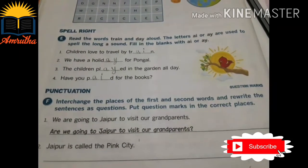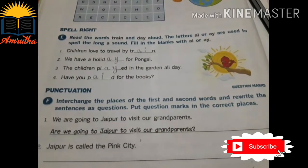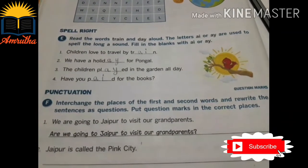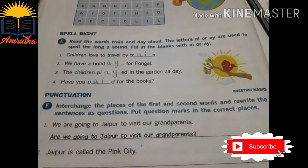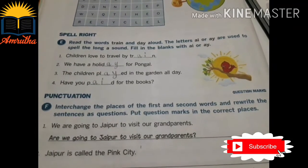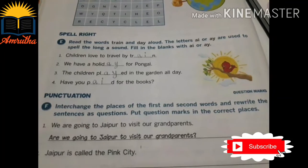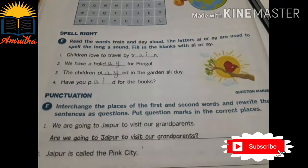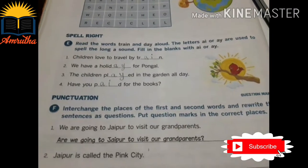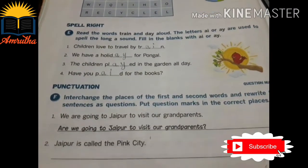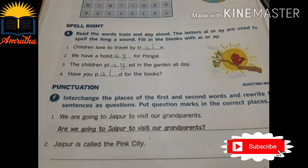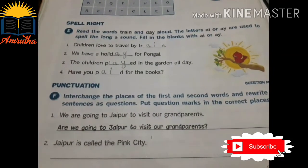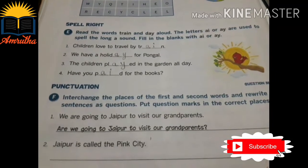Next we have Form and Punctuate. Interchange the places of the first and second words and rewrite the sentences as questions. Put question marks in the correct places. We have to change the positions of the first and second words. For example: